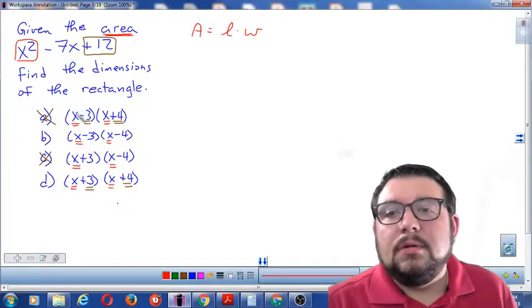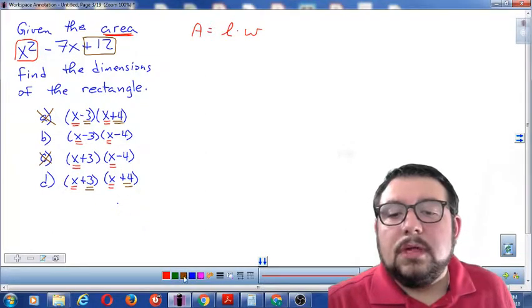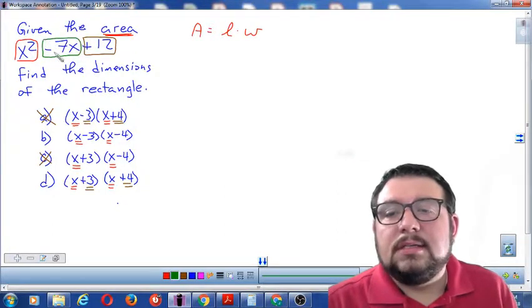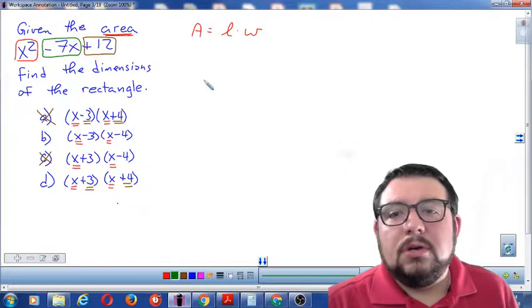So now it's time to narrow it down. Okay, so to narrow it down, we're going to look at the final choice, which is negative 7x. That's the middle term. Okay, so to check the middle term, we can do a strategy called drawing the smile.